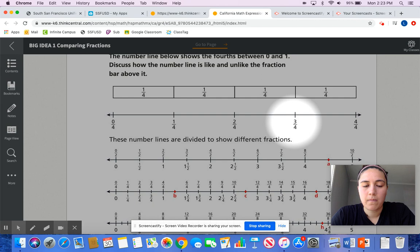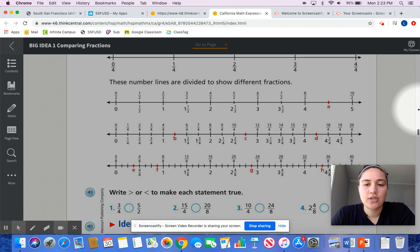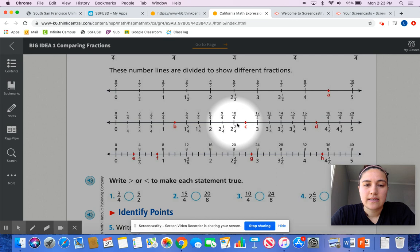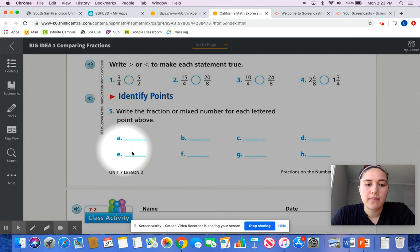Now if we look down here, it says these number lines are divided to show different fractions. If you look, it says A, B, C, D, and so on. Those are going to be the fractions that you're going to write at the bottom of the page, where it says to identify the points.